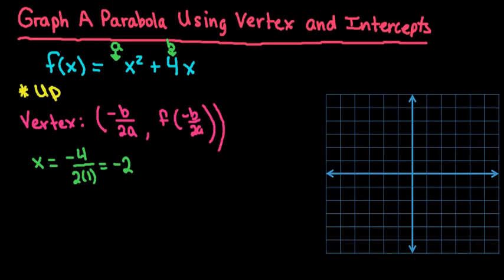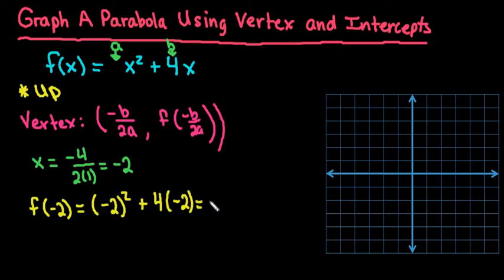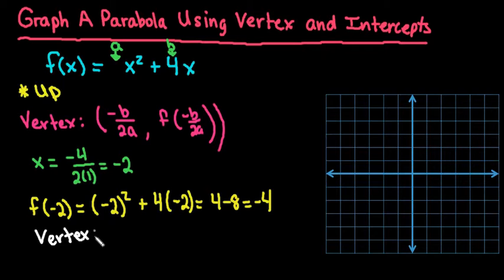To find the y-coordinate, I find f of negative 2. Be very careful about squaring a negative: when you square a negative in parentheses it becomes positive, but without parentheses your calculator could give you negative 4, which will affect your answer. So I get negative 2 squared plus 4 times negative 2, which simplifies to 4 minus 8, giving me negative 4. Our vertex is at the point negative 2, negative 4.